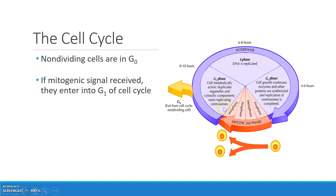The cell cycle is made up of two main parts: interphase, which you can see here highlighted as the purplish-blue stages, and M phase, which is the mitotic phase. We're going to go through the cell cycle stages in order in the next several slides.